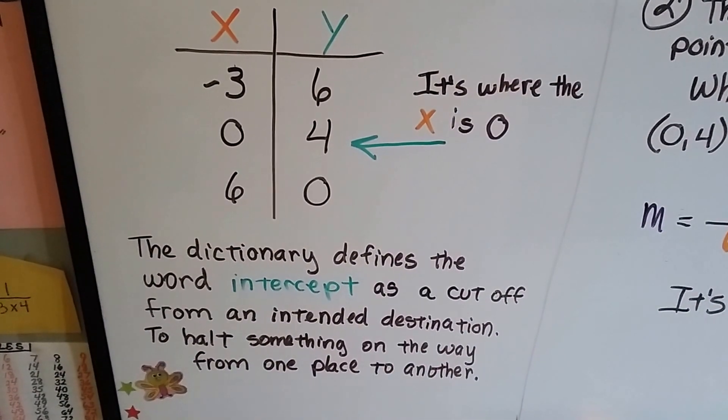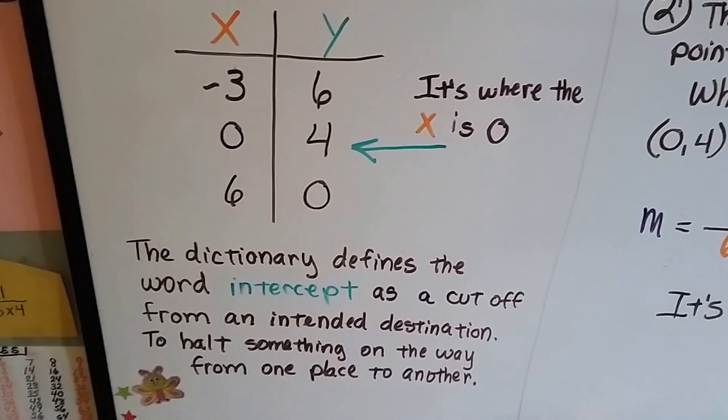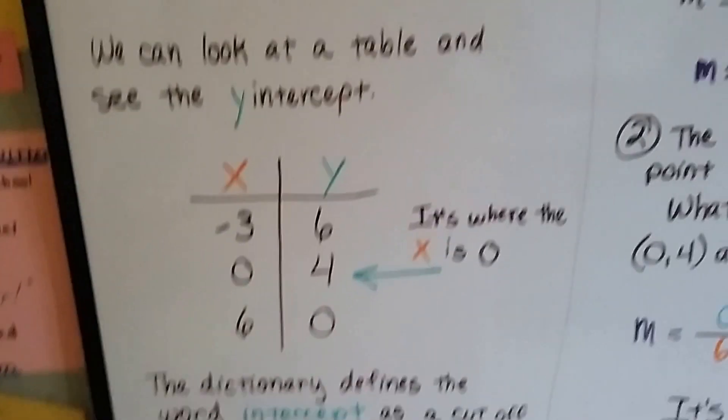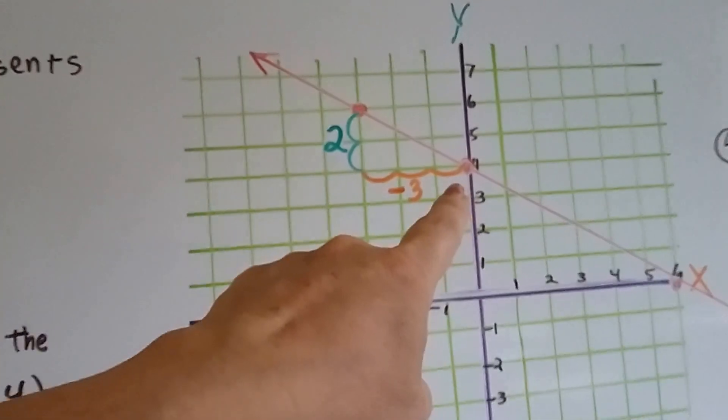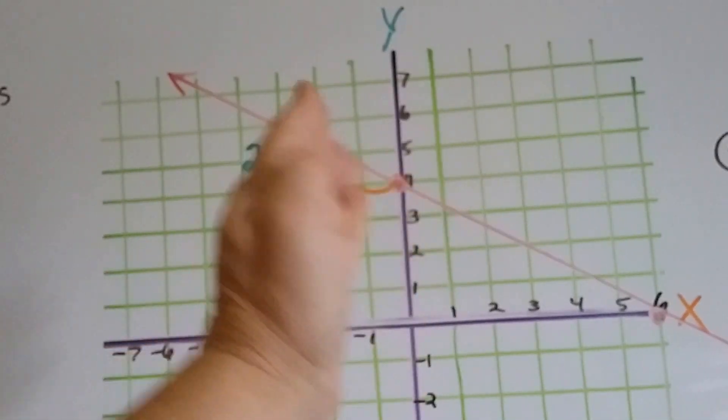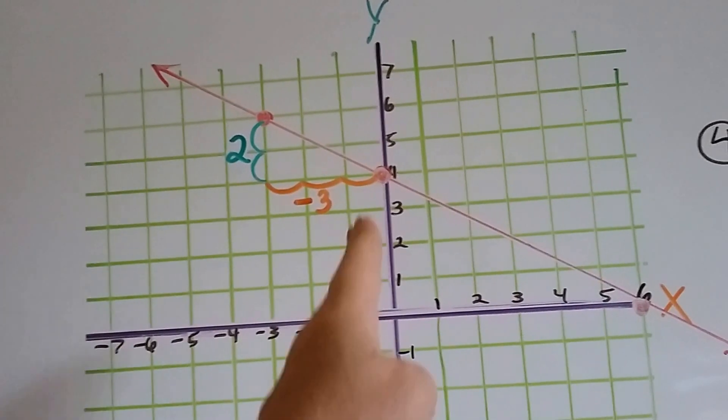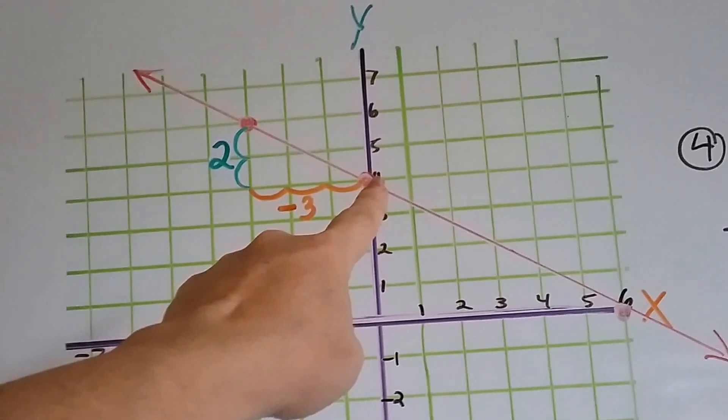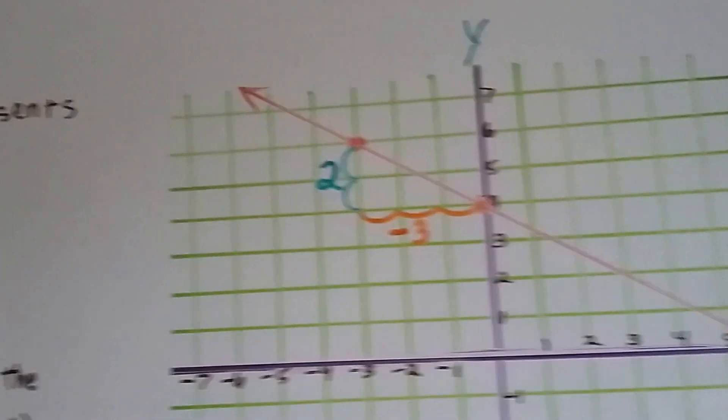The dictionary defines the word intercept as a cutoff from an intended destination or to halt something on its way from one place to another. And when we look at a graph and we look at where the 4 is being intercepted by the line, it is being cut off from right there. That is like a cutoff point on the line. It's slicing it right there. That's the y-intercept. It's on the y-line on the 4.